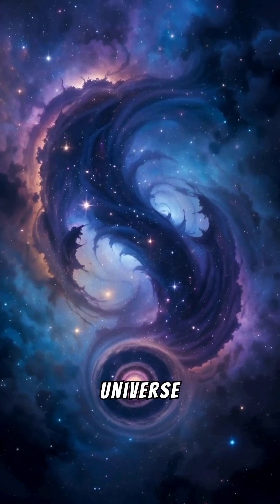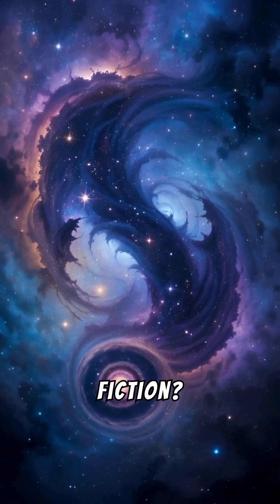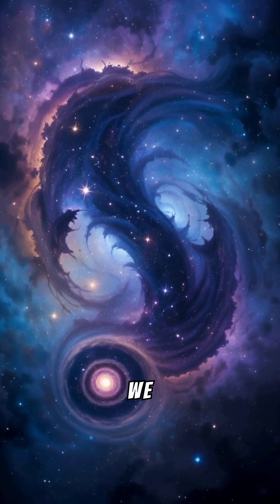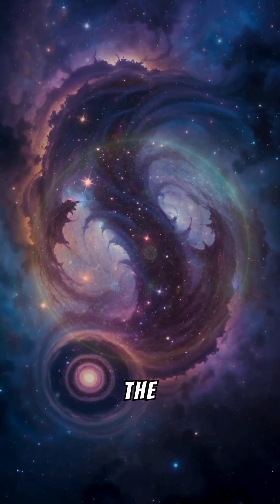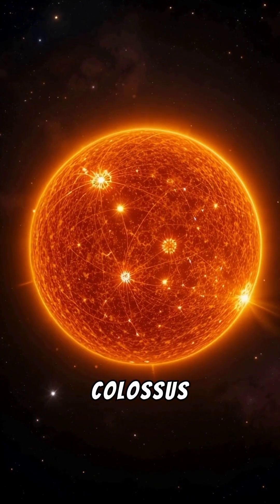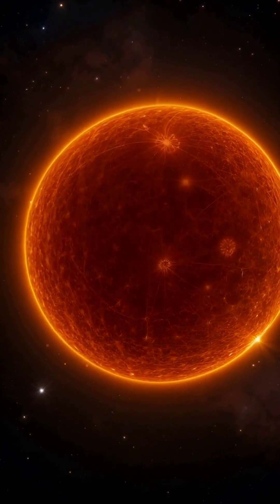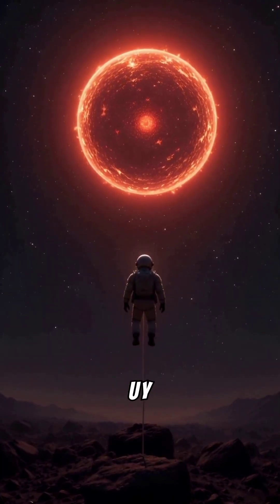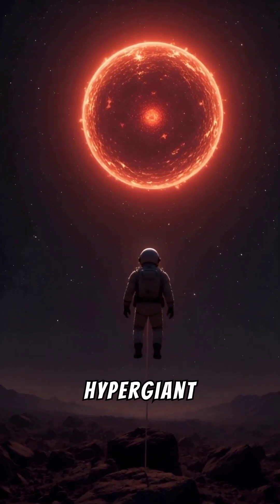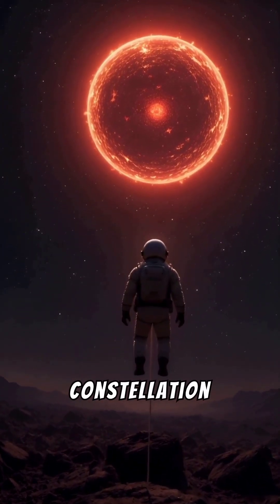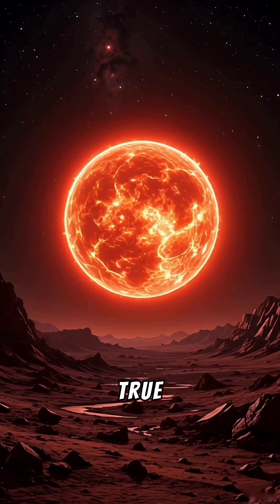Did you know that the universe holds secrets beyond all fiction? Today we reveal one of the most impressive: the largest known star, a colossus that dwarfs our sun to the point of making it look like a speck of dust. We're referring to UY Scuti, a red hypergiant that rises majestically in the constellation of Scutum, a true beacon of immensity in the cosmic night.